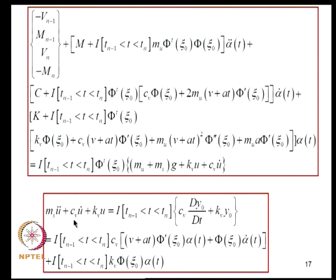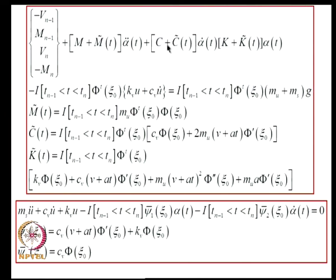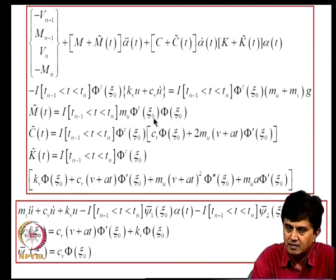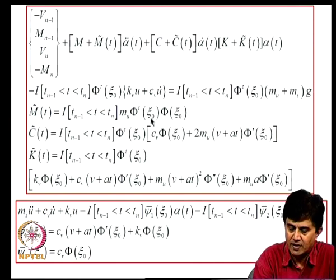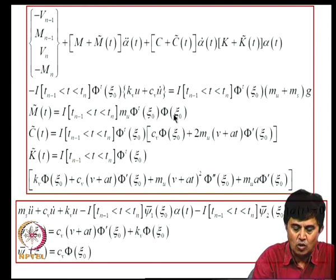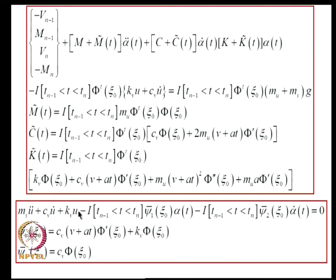The vehicle degree of freedom can be written using Y_0 and DY_0/DT from the representation derived earlier. We can now write the mass matrix as M + M-tilde, the damping matrix as C + C-tilde, and the stiffness as K + K-tilde. These tilde-rated quantities are functions of time, since XI_0 = VT + 0.5AT² changes with time. We thus obtain the governing equations for both the beam and the vehicle.